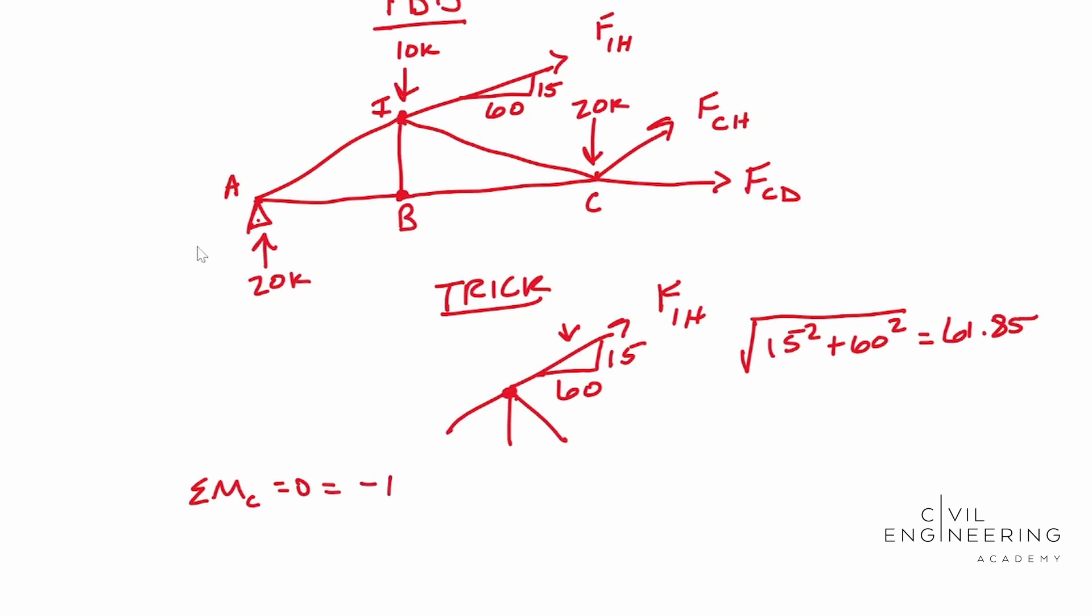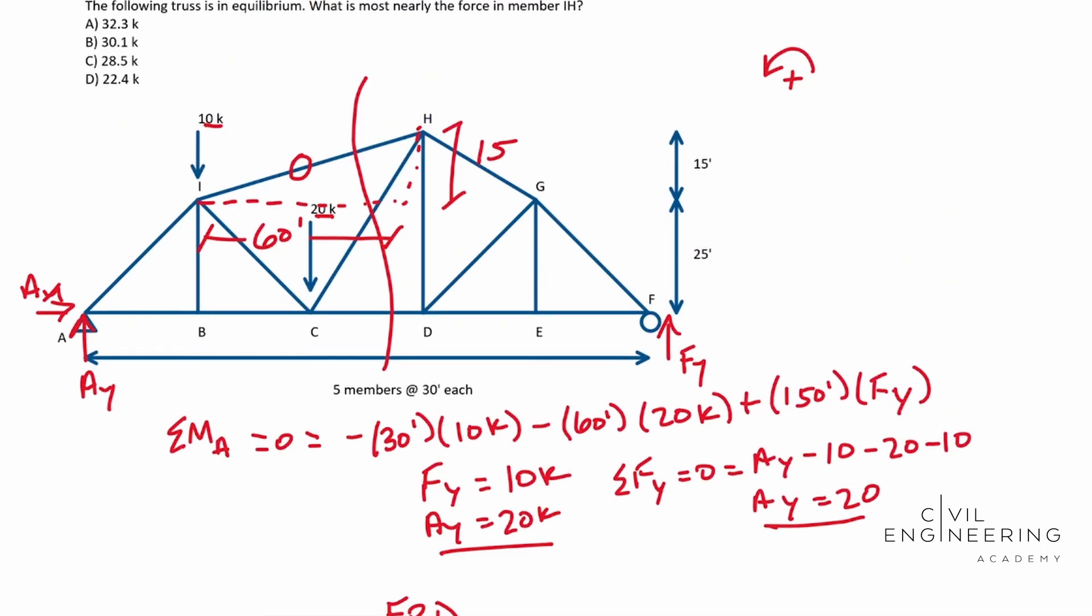So that's equal to zero. We have a negative FIH, and here's where that ratio comes from. We're going to do 60, we're going to multiply it by 60 over 61.85, times whatever the distance is away, that's going to be 25 feet in the perpendicular direction. So where that came from, I kind of forgot to draw the dimensions here. This right here is 25 feet based on our diagram earlier. If you don't believe me, we'll go ahead and scroll up right there. So that's where that came from.